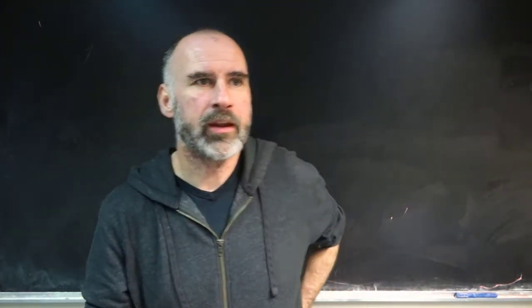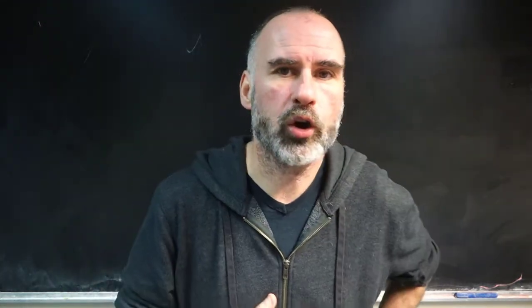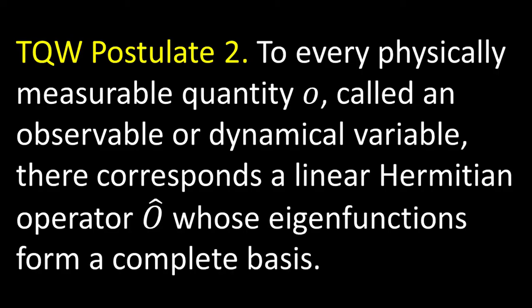So having brought out that distinction again between classical and quantum systems, let's move on to think about the mathematical framework underpinning quantum systems in terms of measurement. The best way to do this, I think, is we're going to have our second postulate, TQW Postulate 2. Let me put that up on the screen, and I'll just read it. To every physically measurable quantity O, called an observable or dynamical variable, there corresponds a linear Hermitian operator O hat, whose eigenfunctions form a complete basis. Okay, so I'm not expecting you to understand really very much of that right now. What we're going to do over the course of the next few videos is tease out almost word for word what that postulate actually means.